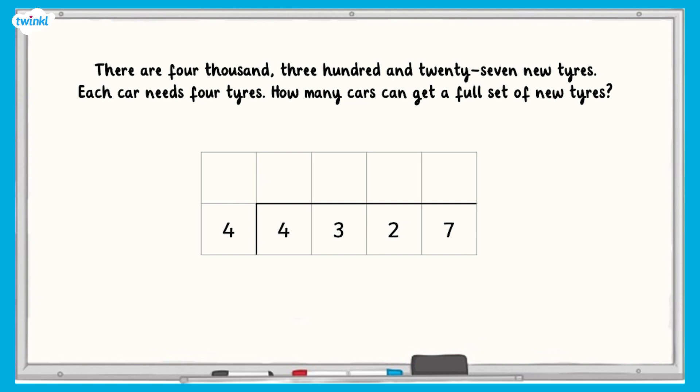The answer to the calculation was one thousand and eighty-one remainder three. You can't have remainder three cars. So the answer is one thousand and eighty-one. The three represents three tyres that are left over.